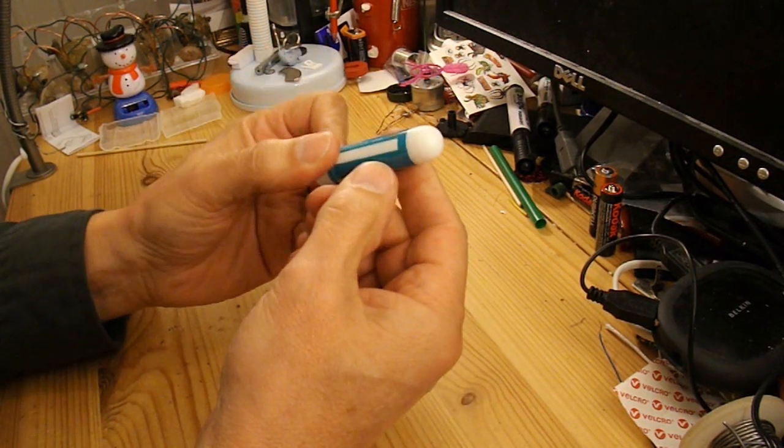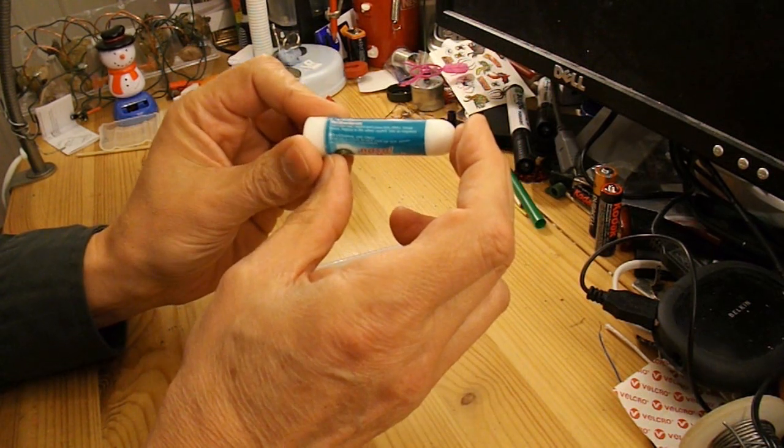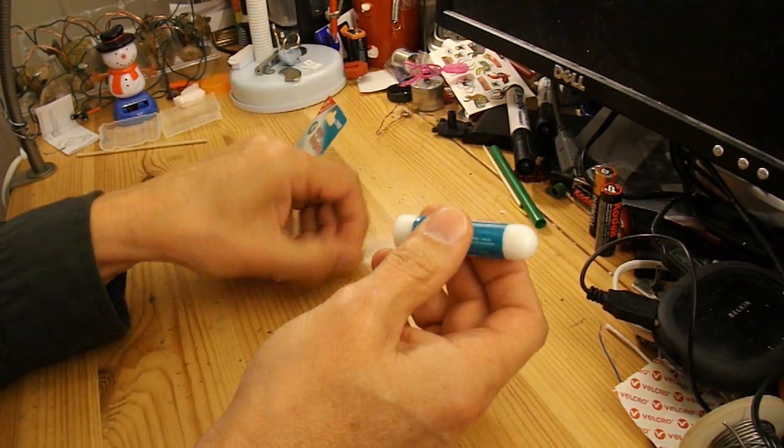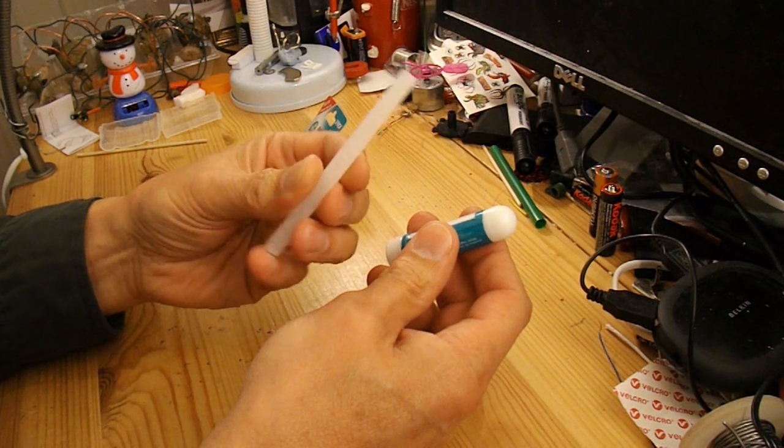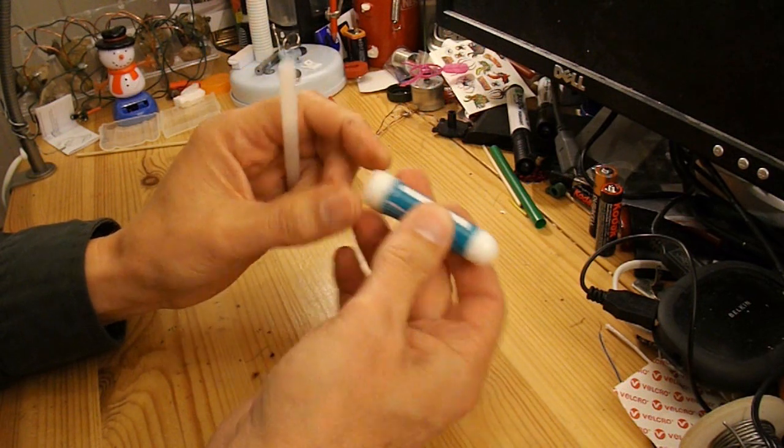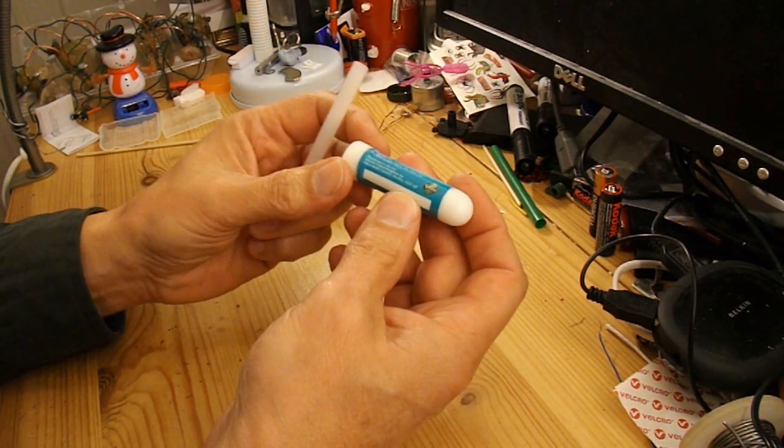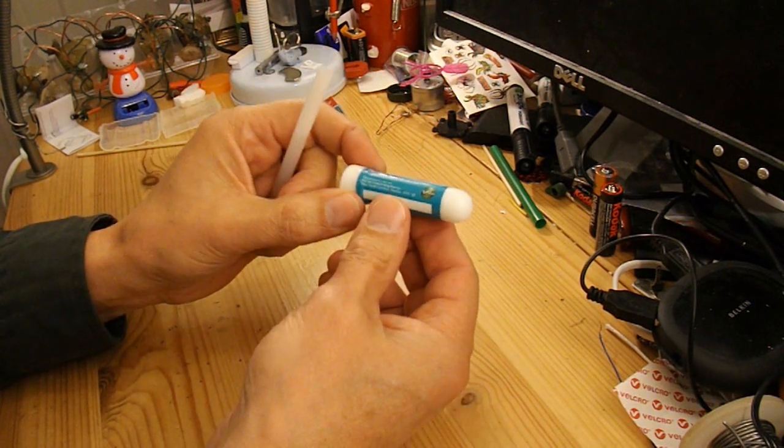So I'm going to take it apart, throw away the innards, because I just want the plastic tube. And that's why it's important to know whether the hot glue sinks or swims. Because if I fill it with hot glue, it's going to float. And I don't want it to float, I want it to just sink.